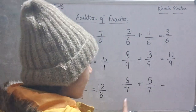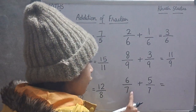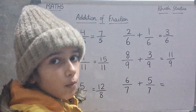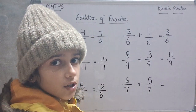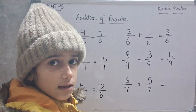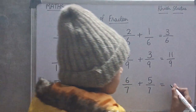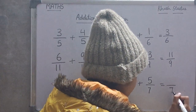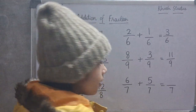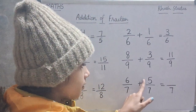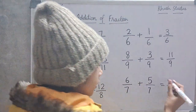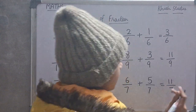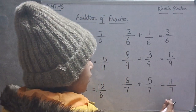Now, we will add 6 upon 7 with 5 upon 7. In both the fractions, denominators are same. So, in the answer, same. Now, we will add 6 plus 5, which is 11. So the answer is 11 upon 7.